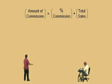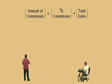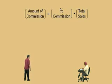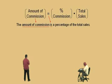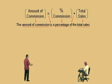Now, in this next problem, we're going to do the amount of commission — very similar to the sales tax. The amount of commission is equal to the percent commission times the total sale. That's our format, because the amount of commission is a percentage of the total sales. So keep this in mind: the amount of commission is a percentage of the total sales, and that will help you remember that equation.